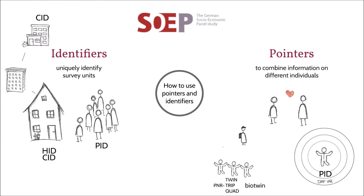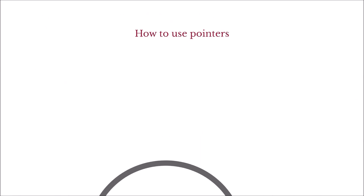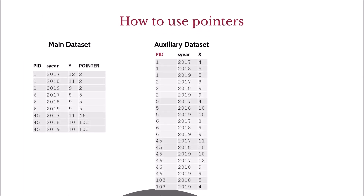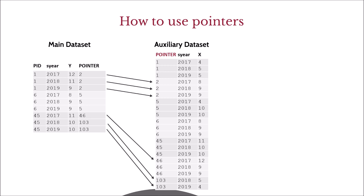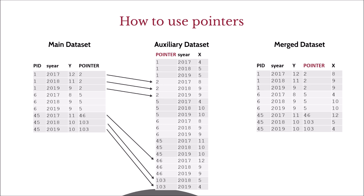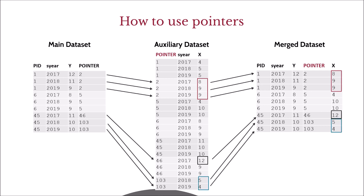Let's briefly clarify how these pointers are used. Once you have added the pointer to your dataset, you can create an auxiliary dataset that contains the individuals you would like to obtain information on. In this dataset, you rename the PID to have the same name as the pointer variable in your main dataset. Then you can merge the required explanatory variables to your main dataset using both the pointer variable and the survey year. As the precise process will depend on the software you are using, I will not go into further detail here.